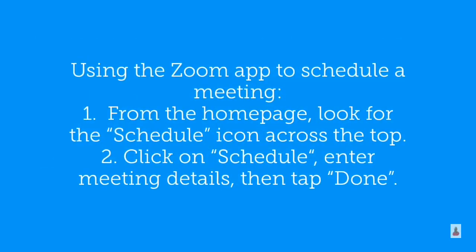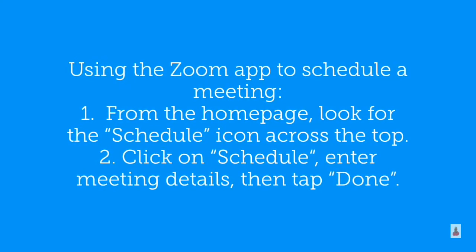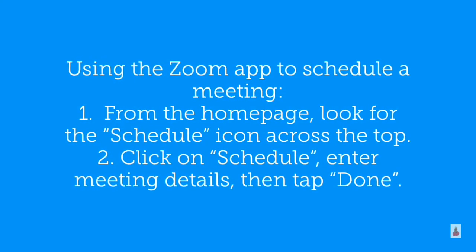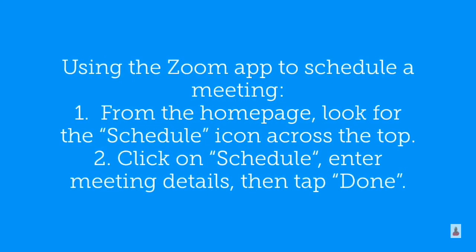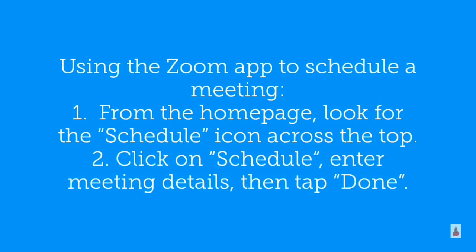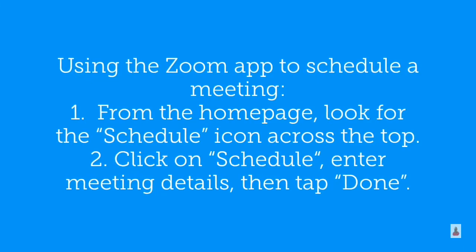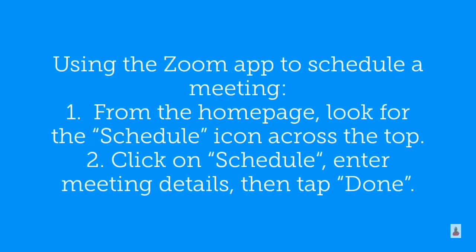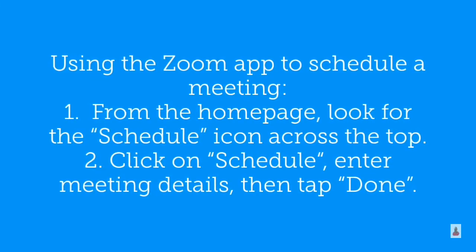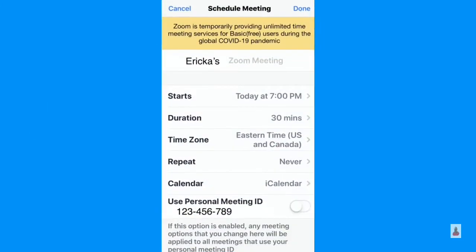Using the Zoom app to schedule a meeting, from the home page, look for the schedule icon across the top. Click on schedule, enter meeting details, then tap done. For example, on an iPhone, the iOS app shows schedule meeting.